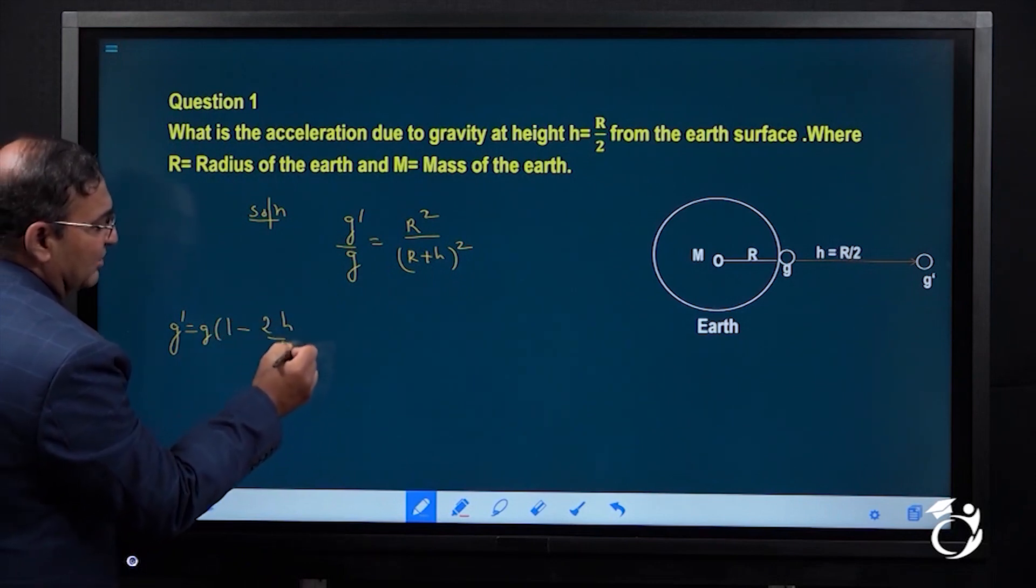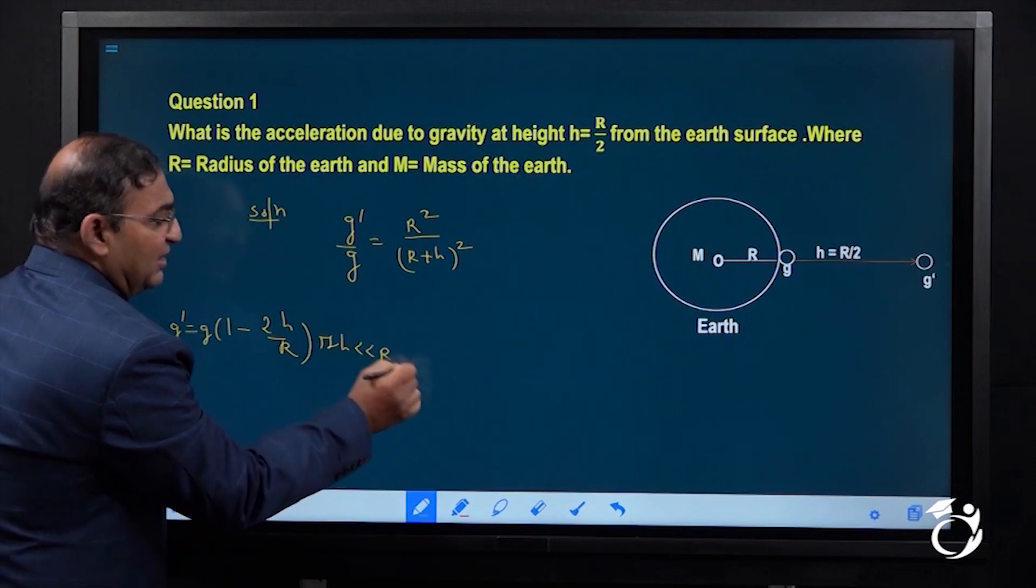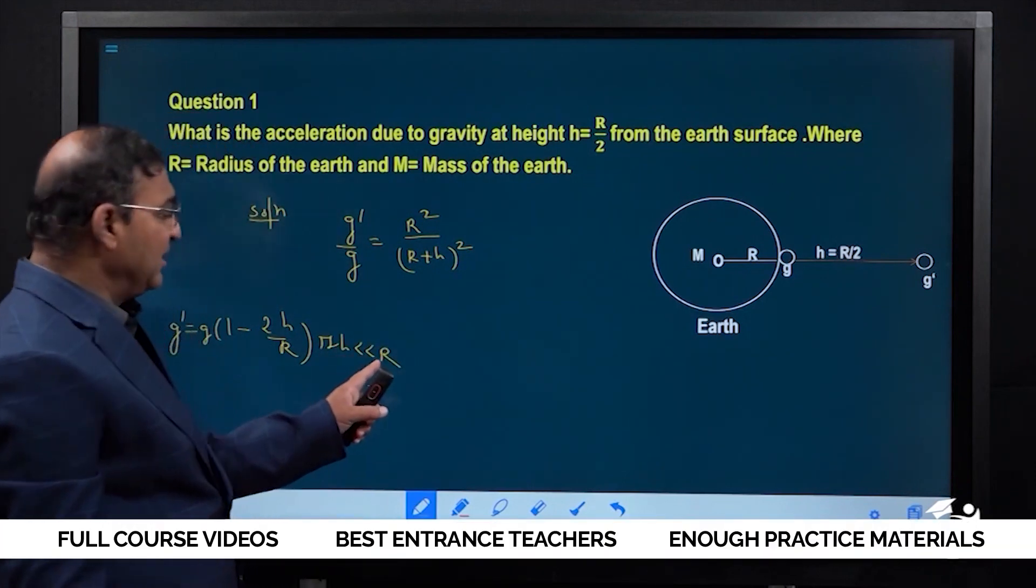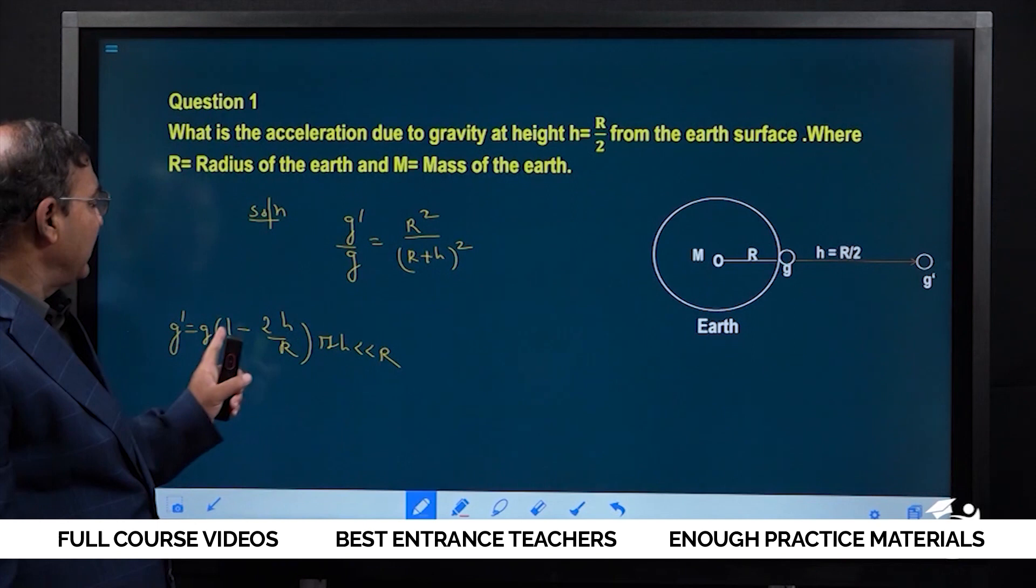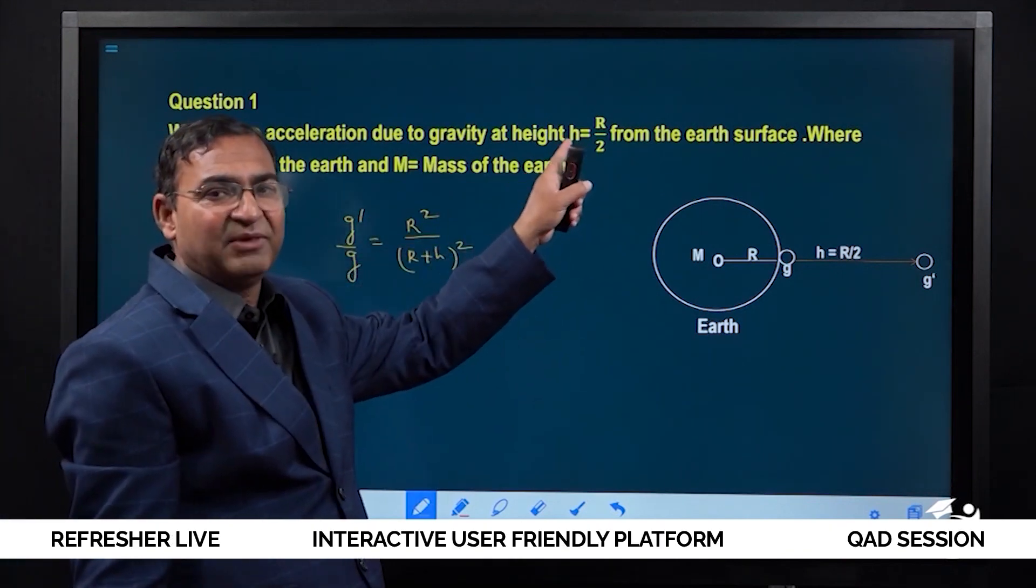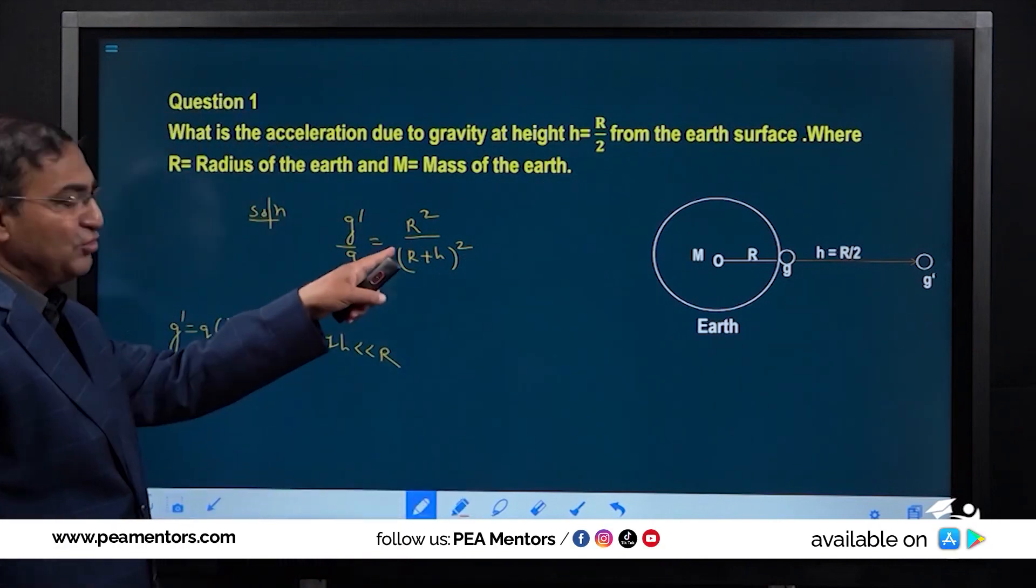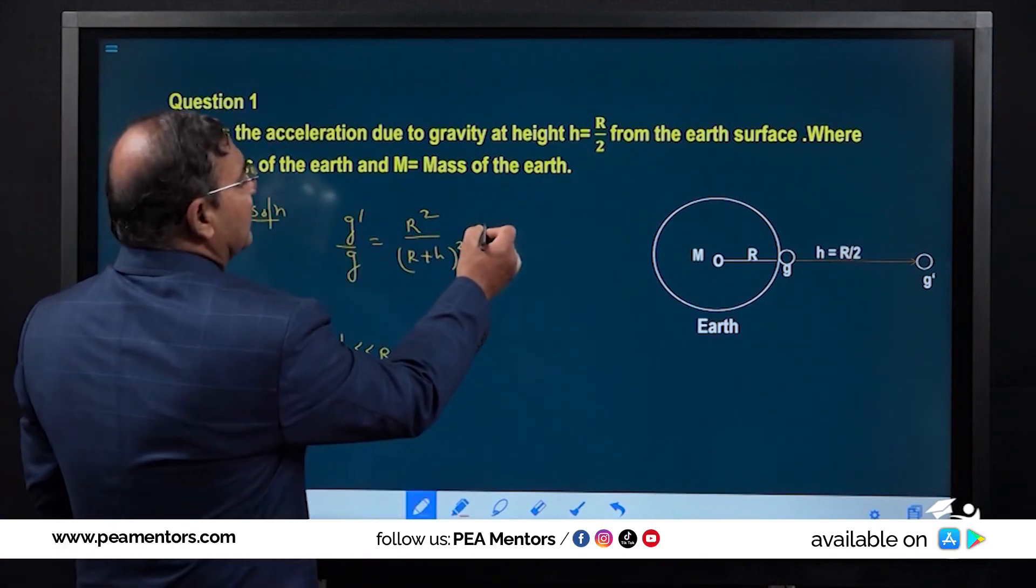If h is very very less than r, then we can use this formula. But here the value of h is r by 2, that is a very big value, so we cannot use this formula. We have to use this formula: r square as it is, r plus h.